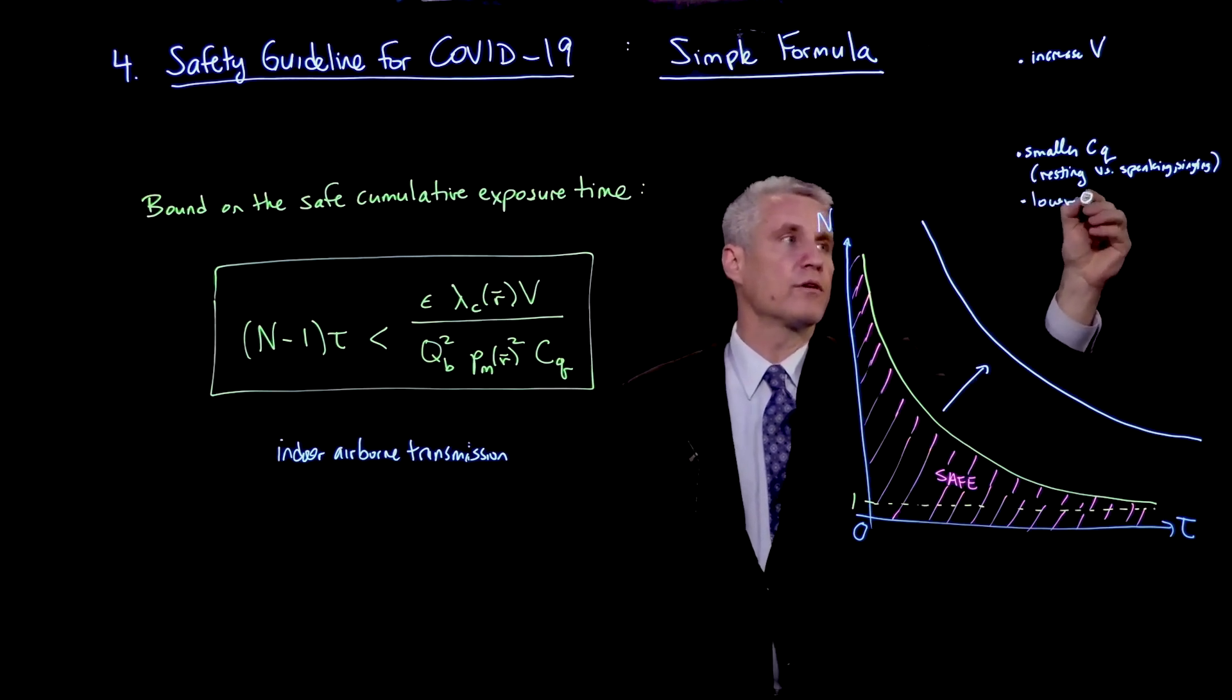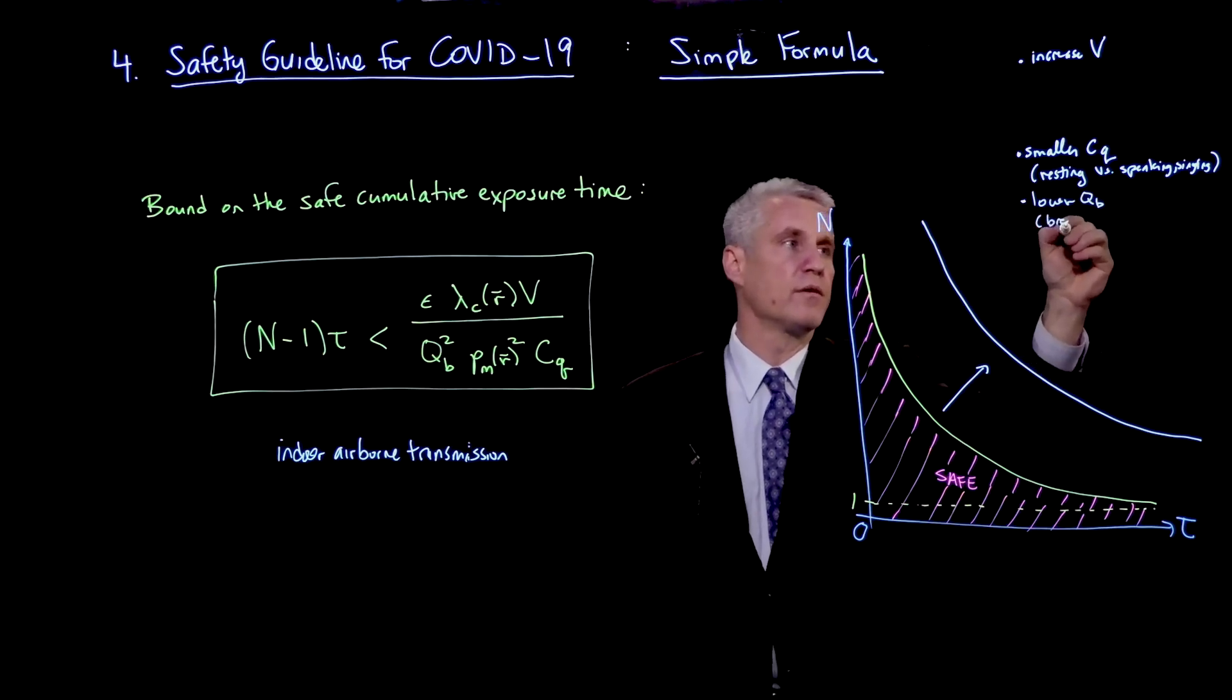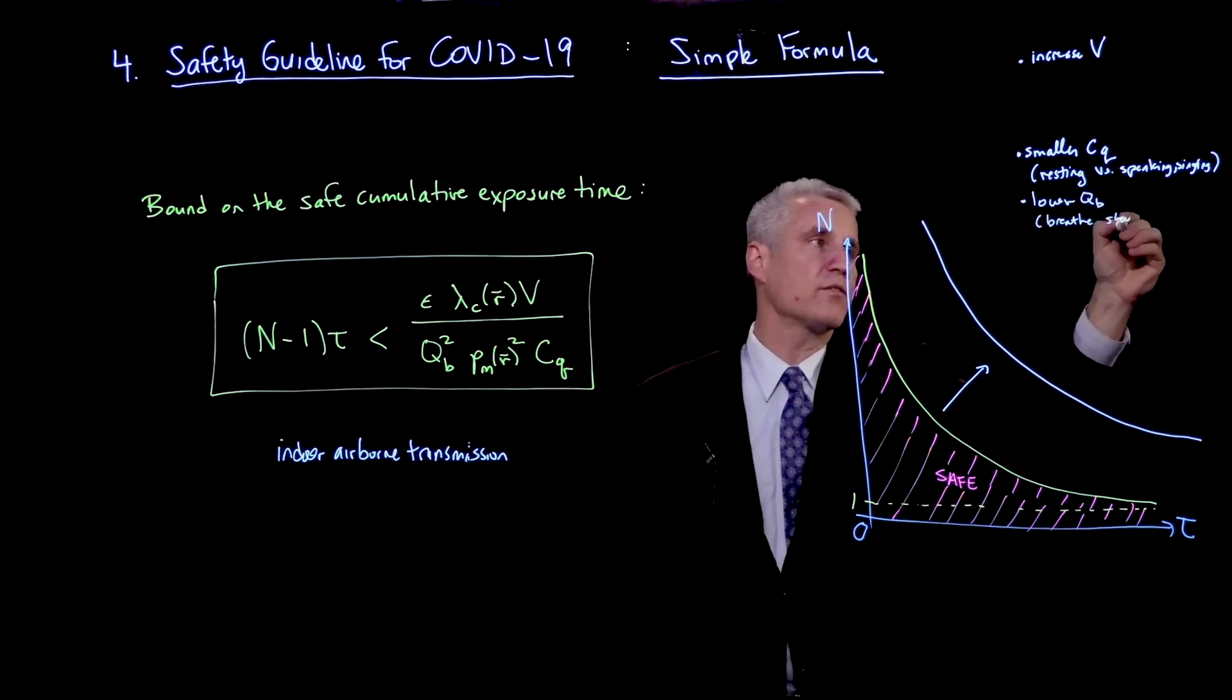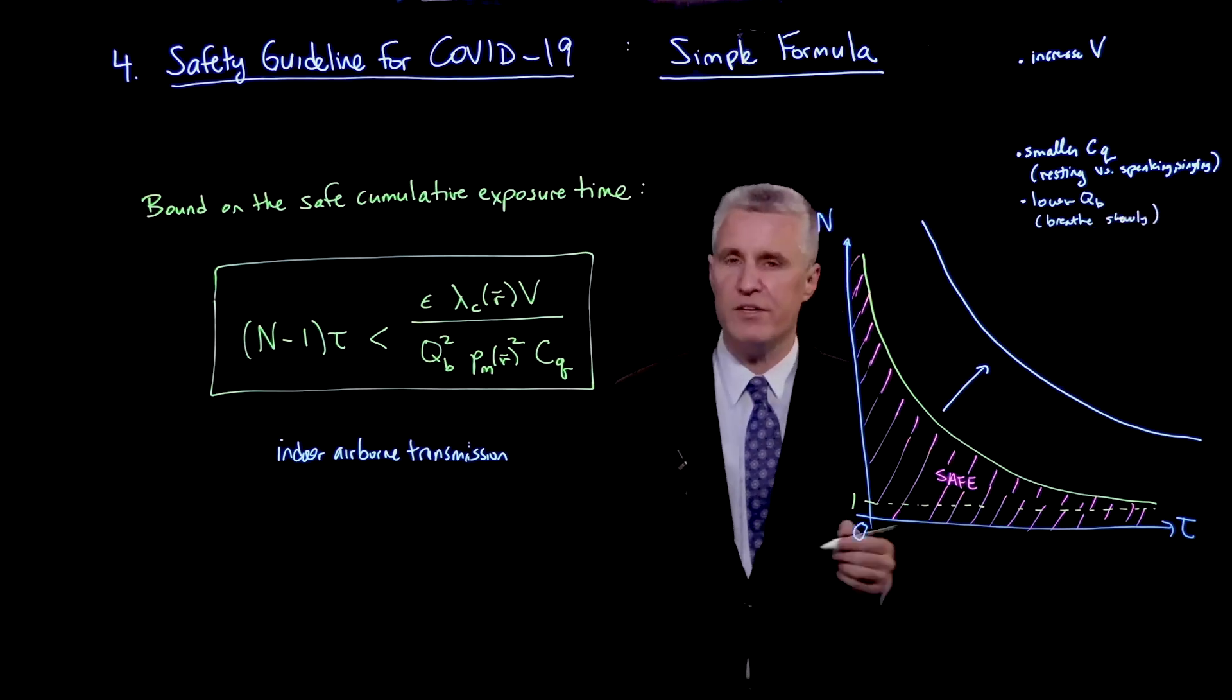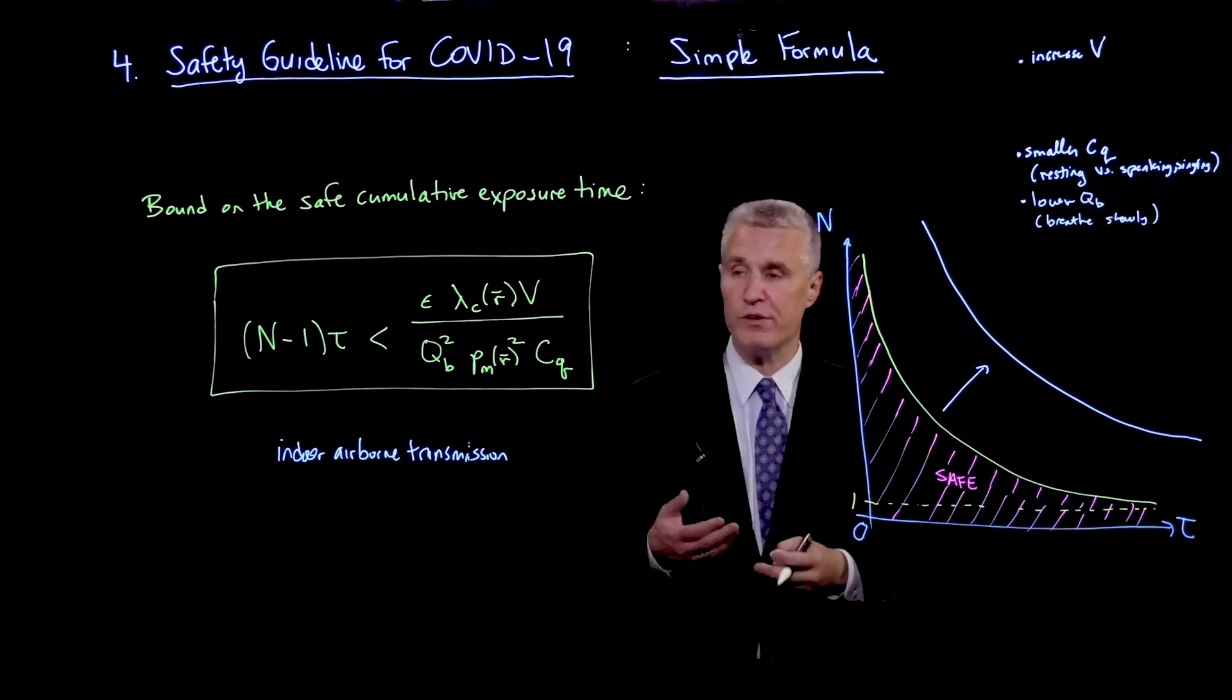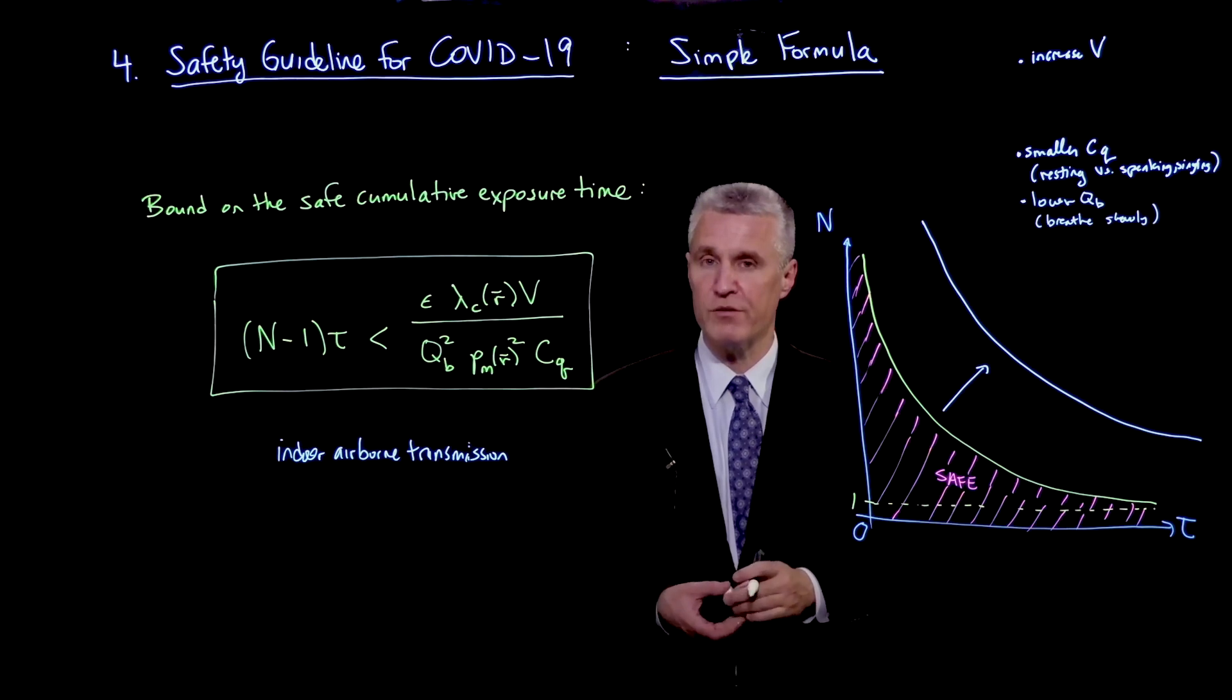We can lower QB, which means breathe slowly or in a more relaxed way. So again, coming back to the activity in the room, if you have heavy physical exercise, your QB might increase, although it doesn't increase that much. Resting breathing is around 0.5 meters cubed per hour,